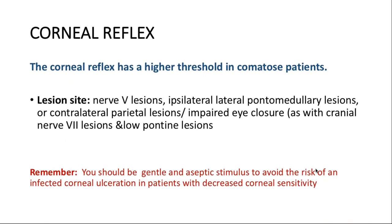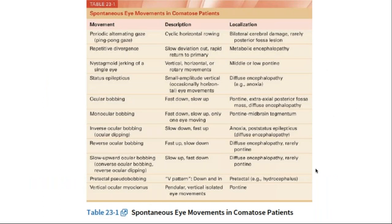The corneal reflex tends to have a high threshold for being lost in brainstem dysfunction. We assess it using the ophthalmic division of the trigeminal nerve — touching the cornea, or alternatively by brushing the eyelashes or using a nasticle stimulus. Both assess the afferent and efferent pathways. Asymmetry in the corneal reflex is important to note. It must be done with aseptic technique since patients are comatose and cannot blink.